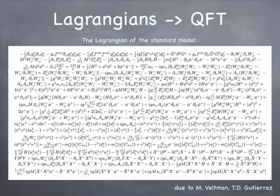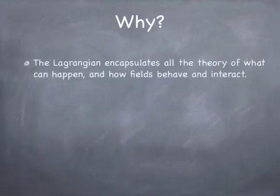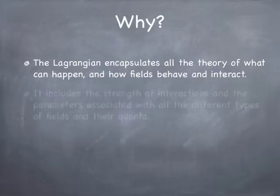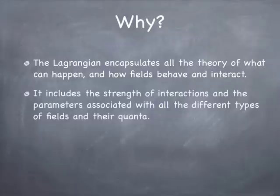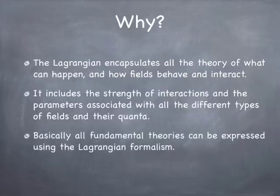What good is a Lagrangian? You could express the entire Standard Model in a single algebraic expression that describes the fields, the particles, their interactions, and everything else. It evaluates to a number — all the vector notation, when you get done, gives you a number that depends on where you are and the value of all the fields. The Lagrangian encapsulates everything we can know about what's going on, and from it we can figure out how to compute the probability of different kinds of events occurring.